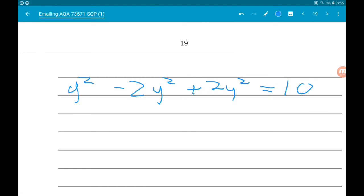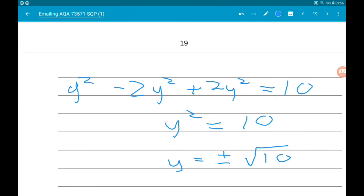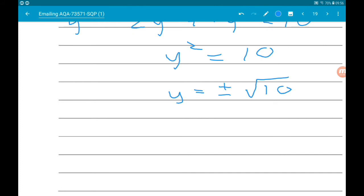So y² is equal to 10. Therefore y is equal to plus or minus √10. So the height between A and B is the difference between the two y values, so it's √10 minus -√10 which gives us 2√10. Question done.